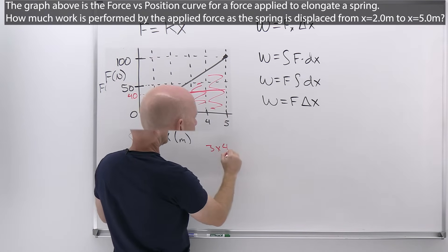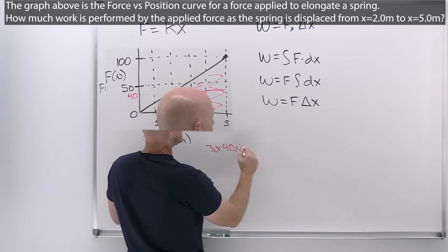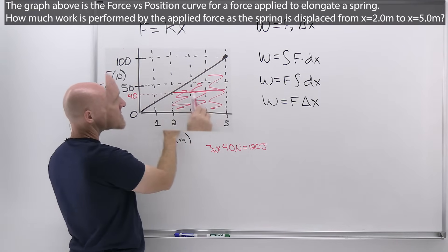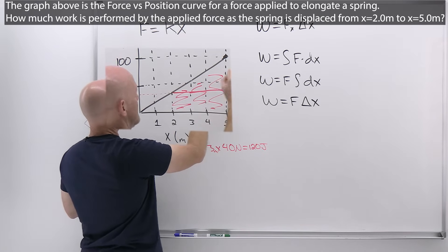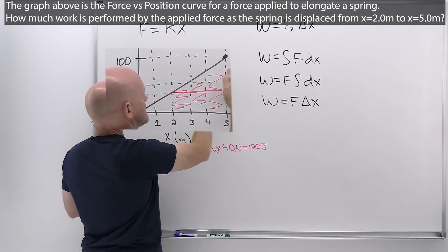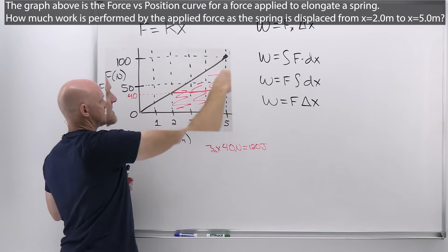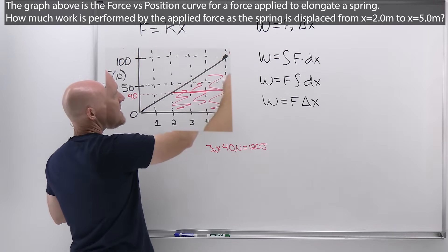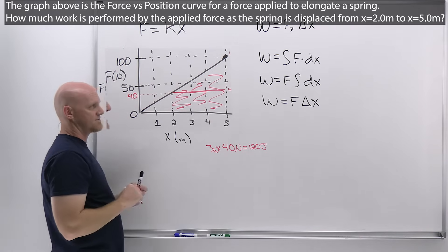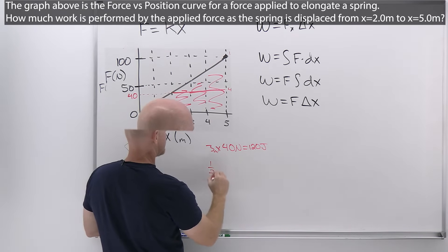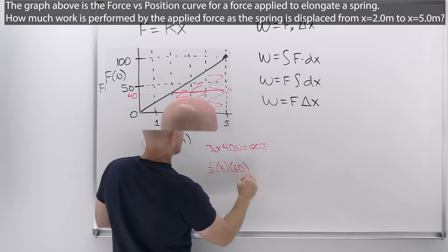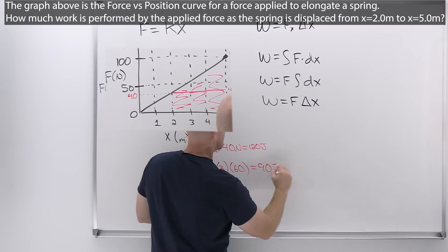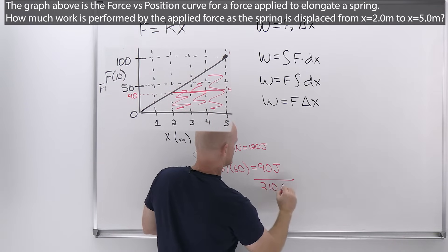The rectangle is 3 meters by 40 newtons, which is technically 3 meters by 40 newtons — that's 120 joules. Then for the triangle on top, it's also 3 meters wide, and the height goes from 40 up to 100, so the height is 60 newtons. The area of a triangle is one half base times height: one half times 3 times 60. One half of 60 is 30, and 3 times 30 is 90 joules. Adding those two together, we get 210 joules.